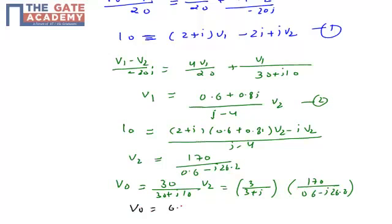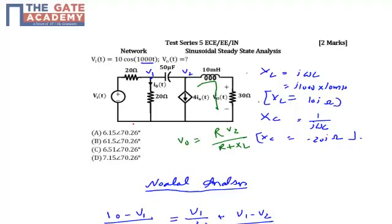It means that my final output expression will be V0 equal to 6.154 magnitude with the angle of 70.26 degrees. So my correct option will be option A. Thank you.